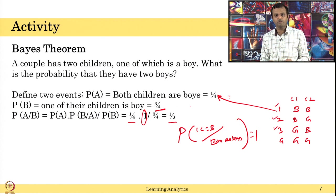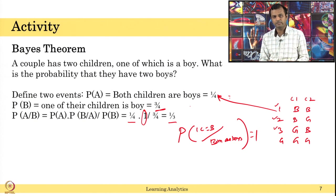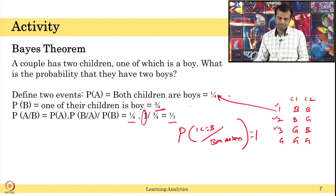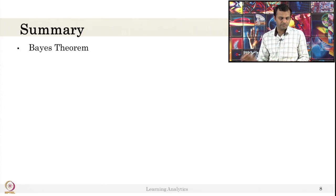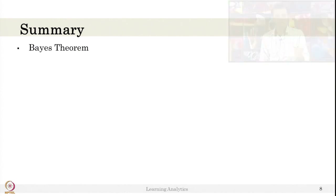Please go ahead and solve more problems related to probability in the internet and understand how it works. That helps a lot to understand Naive Bayes theorem. Naive Bayes theorem is just this Bayes theorem. We saw what is Bayes theorem — not the Naive Bayes classifier in this slide, but it is Bayes theorem and how it is constructed from conditional probability. I request you to solve more probability problems using Bayes theorem. Thank you.